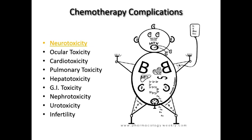We're back for the second half of the intro to chemotherapy. Here we have famous chemo man. Let's use him as we move from one system to another, describing common complications resulting from chemotherapy. Chemo man is full of great information. There is a bag hanging above his head with a D, V, and dox written in it — this is trying to convey extravasation.